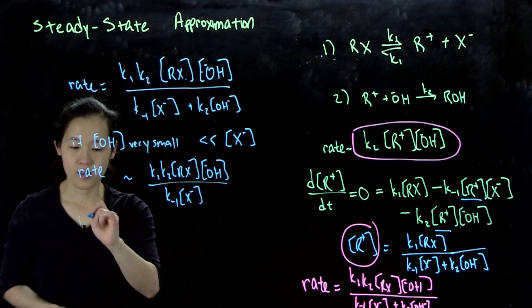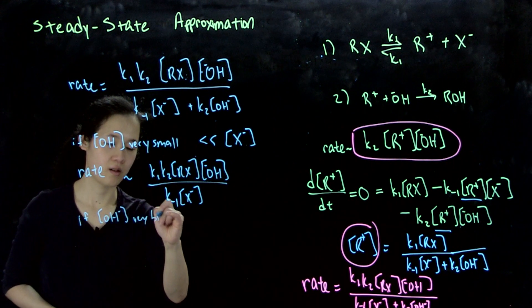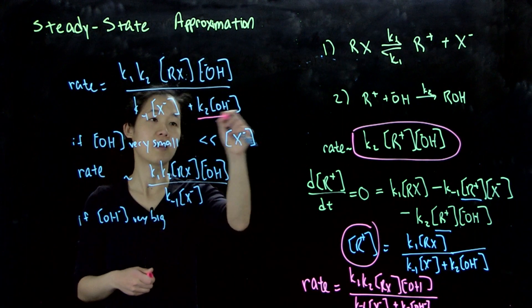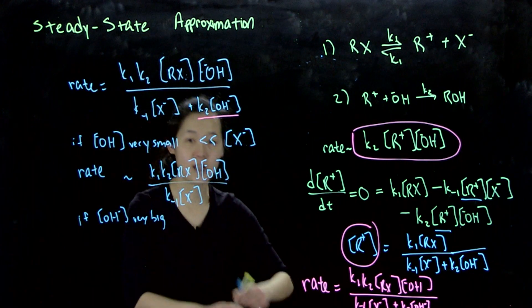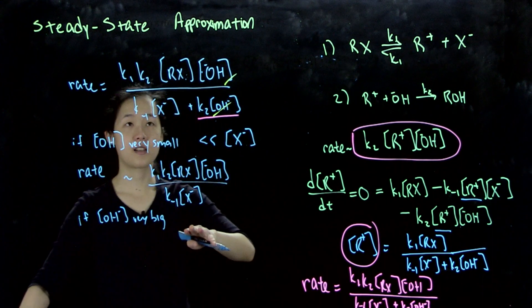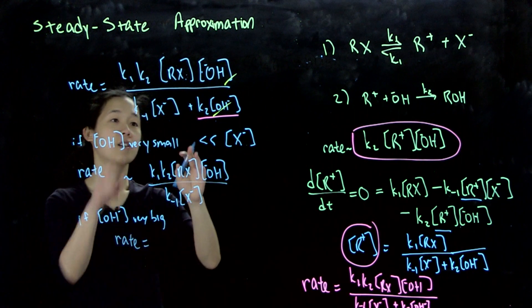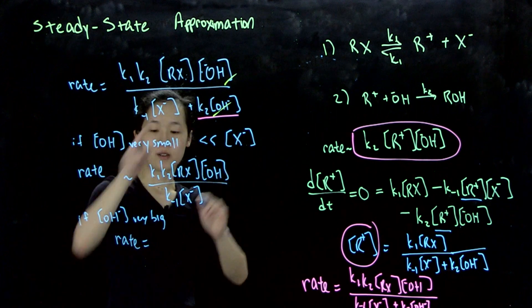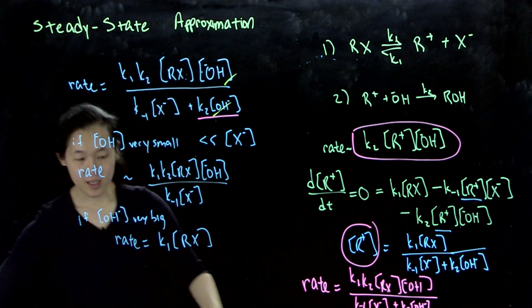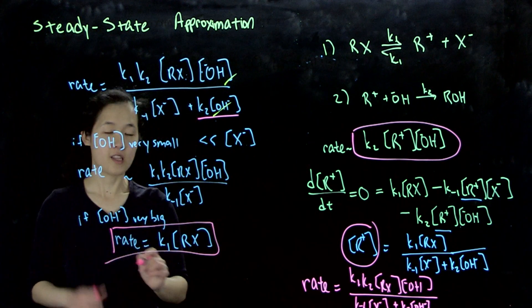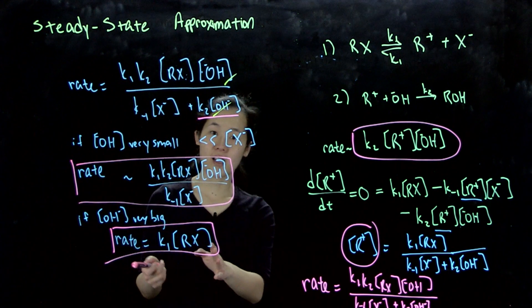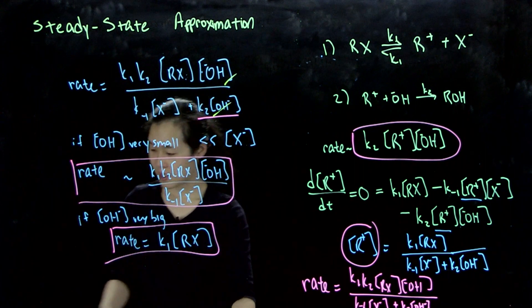But if our OH minus is very big, then our denominator is going to be dominated by this term, this OH minus term, which means that these two will then cancel out. So in yellow, this happens if OH minus is very big. Keep in mind, this only crosses out under these conditions. And then our rate is going to be equal to, so K2 will divide out, OH minus will divide out, so rate equals K1 times RX. So these are kind of limiting conditions that change with different concentrations of hydroxide. What this means is that at high concentrations of hydroxide, we are zero order in hydroxide. So that's kind of an interesting situation.